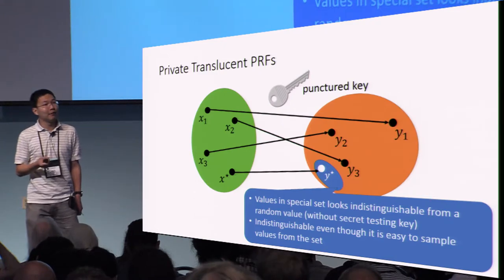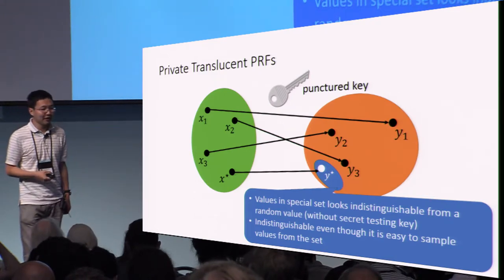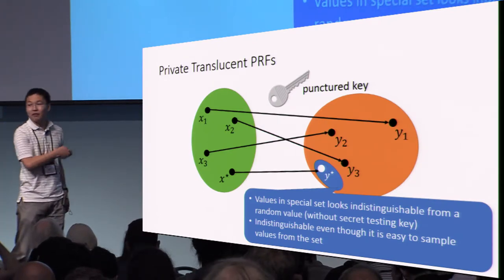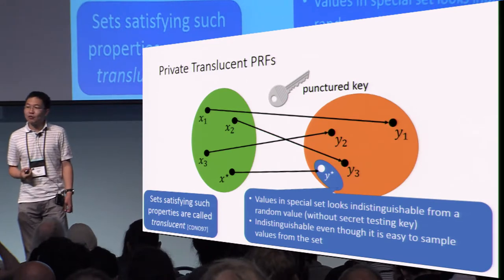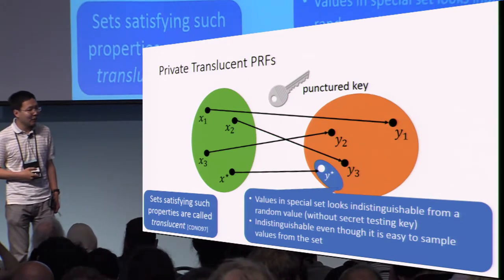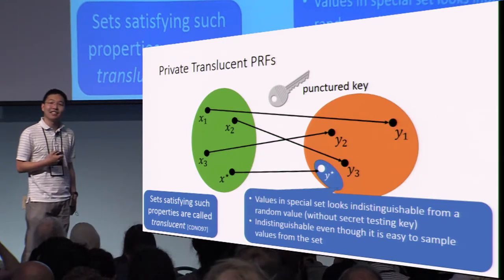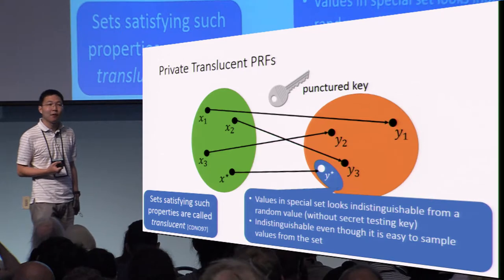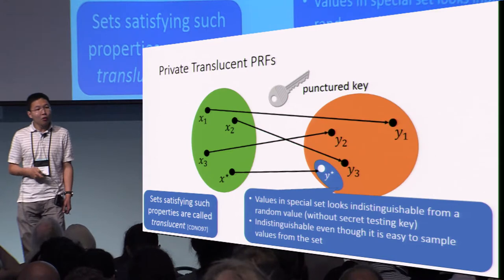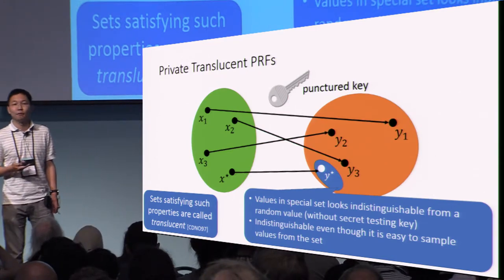Set systems that satisfy this property were first introduced as translucent set systems in the work of Canetti et al. in the context of building deniable encryption. In our case, we are essentially embedding a translucent set system within the output space of a pseudo-random function, hence the name private translucent PRF. Once we have this cryptographic primitive, it is actually fairly straightforward to build watermarking.